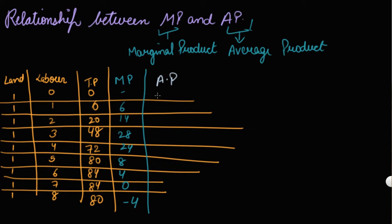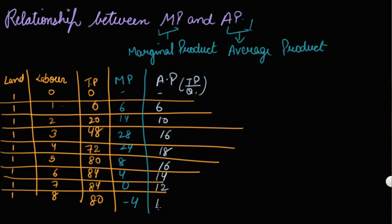Your average product will be calculated as TP divided by the units — quantity, you can say the units. So TP: 6 by 1 is 6, 20 by 2 is 10, 48 by 3 is 16, 72 by 4 is 18, 80 by 5 is 16, 84 by 6 is 14, 84 by 7 is 12, and then 10.